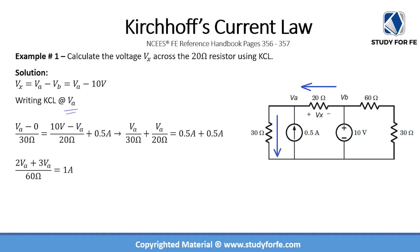When we write the KCL at node A, we have to keep track of the currents entering and leaving the node. You can make a judgment call on the direction of currents. The 0.5 amp current source is going to be injecting current into this node. Similarly, the current passing through the 20 ohm resistor is assumed to be entering the node because it is backed by a 10 volt voltage source, which pushes current out of its positive terminal.